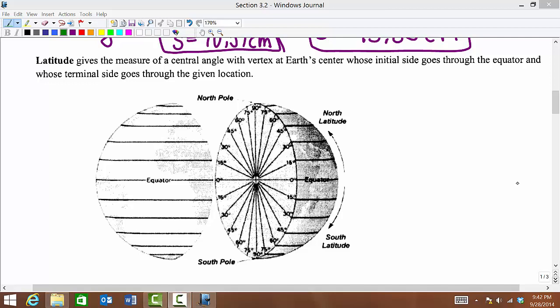Locations on the Earth are measured by latitudes and longitudes. Latitudes give the measure of a central angle.